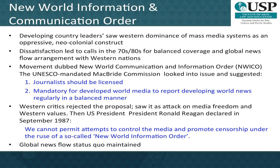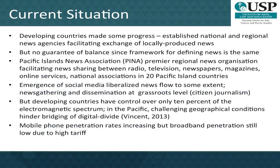So the global news flow status quo was maintained. The current situation has not improved much, even though developing countries have made some progress. The establishment of national and regional news agencies has facilitated the exchange of locally produced news. But there is no firm guarantee of balanced reporting since the framework for defining what is news is the same. Social media has liberalized news flow with citizen journalism to some extent, but developing countries have control over only 10% of the electromagnetic spectrum. In the Pacific, challenging geographical conditions hinder bridging the digital divide.